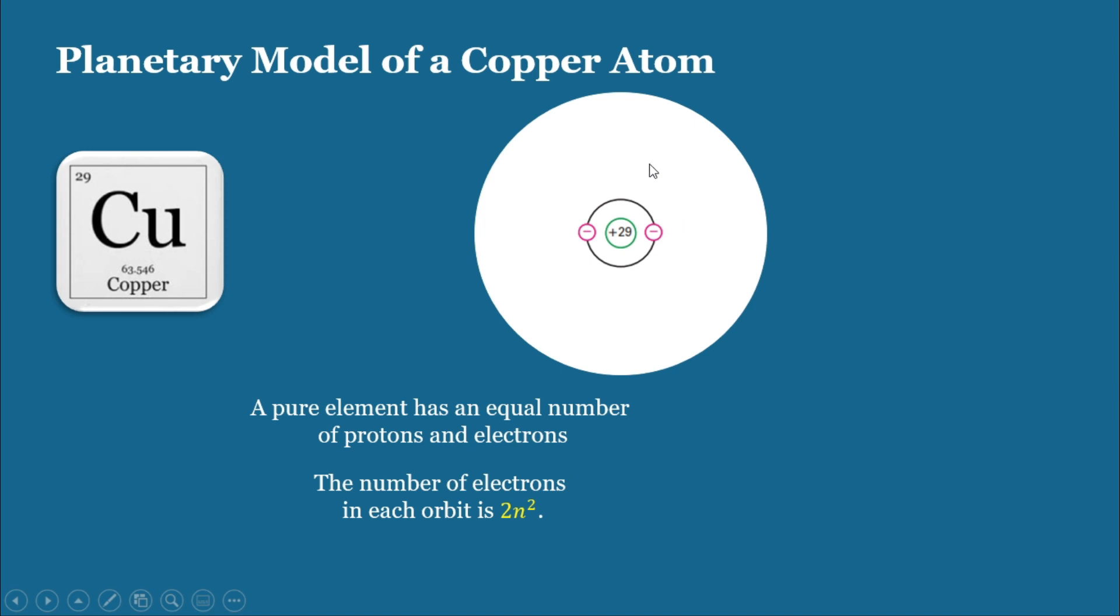Now, for the second orbit where n is equal to 2, 2 times 2 squared equals 8 electrons. Therefore, a maximum of 8 electrons can occupy the second orbit. Since the first orbit, we have already 2 electrons plus 8 on the second orbit, we have now a total of 10 electrons.